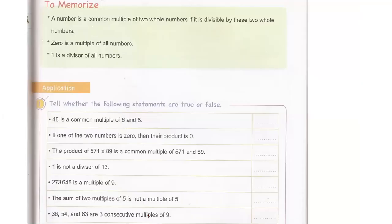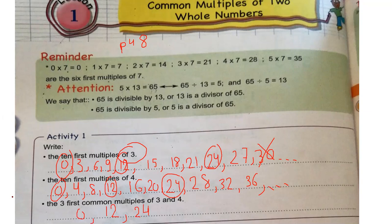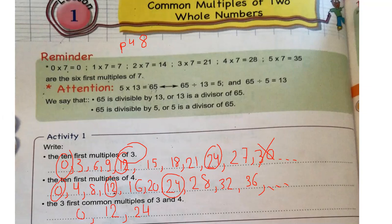Let's read to memorize, page 49: a number is a common multiple of two whole numbers if it's divisible by these two whole numbers. For example, 0, 12, and 24 are common multiples because they are divisible by three and divisible by four — meaning they are in both tables. Zero is a multiple of all numbers — zero is in table two, in table three, in table four. Always when I say multiples, we have to start with zero.